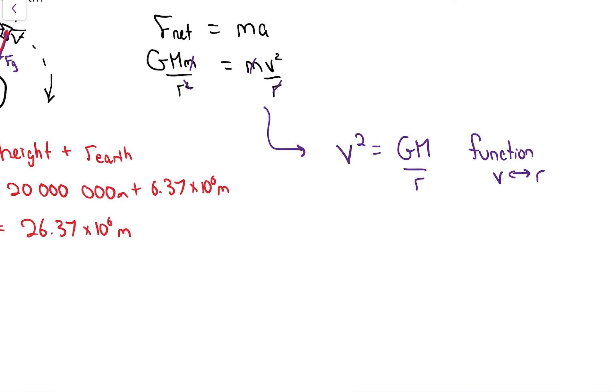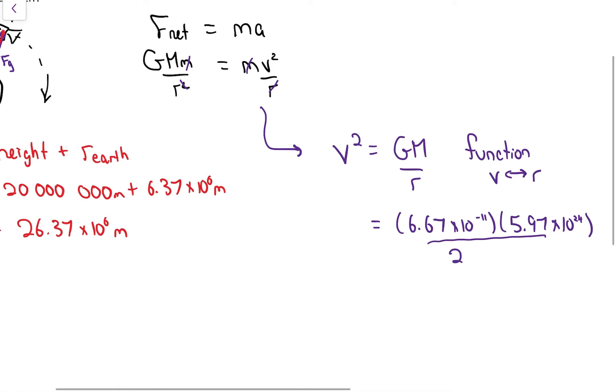For our GPS satellite, well, we know that G is always 6.67. That's orbiting the Earth. That mass is the 5.97 number. You don't have to memorize numbers if you need to. Google them or they'll be on worksheets when we need them. The R is that 26 million number.